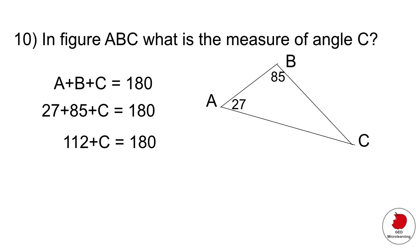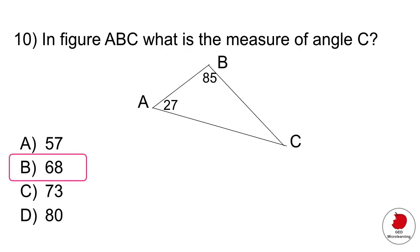Now all we have to do is isolate C. We do that by subtracting 112 from the left side of the equation, doing the same on the right, and that gives us 68. If you add all of these values together, 68 plus 85 plus 27, you get 180 degrees. So your correct answer would be B.